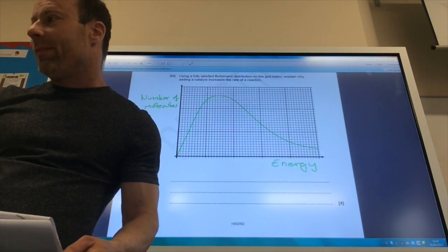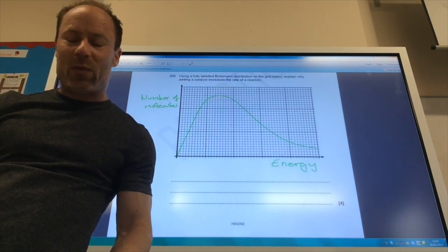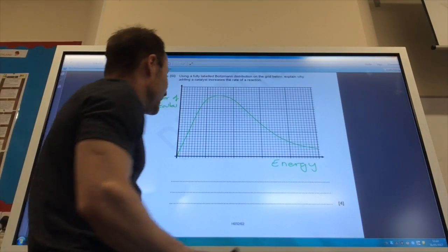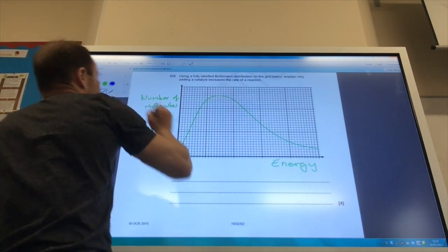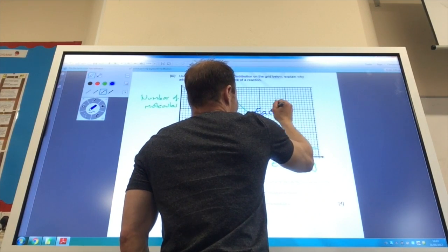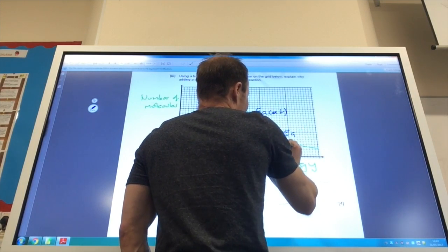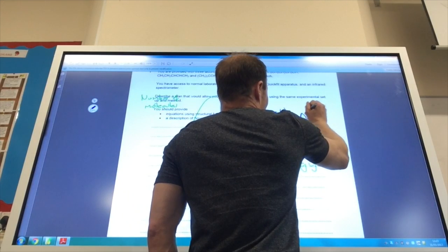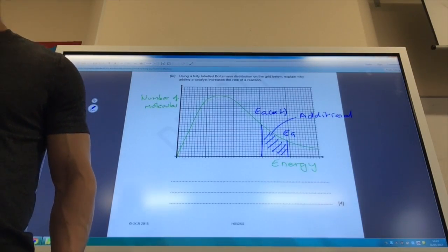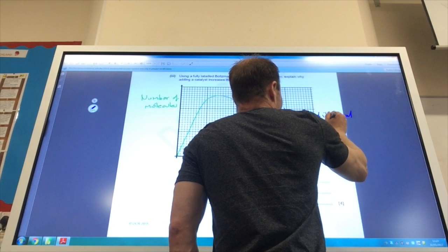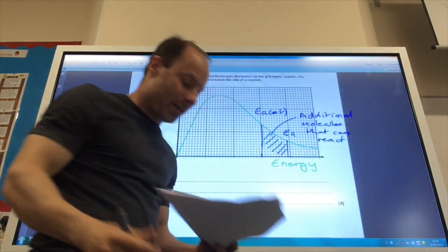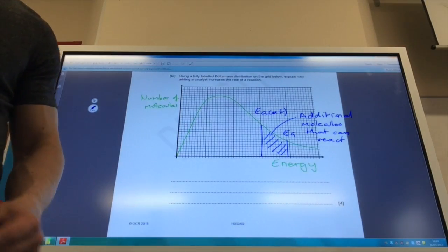Okay, so they want me to now draw a Boltzmann distribution, which I've done. Remember to label your axis. Explain why adding a catalyst increases the rate of reaction. Well, a catalyst provides an alternative route with a lower activation energy, so if you like, you can label this on the diagram. So if that's Ea, this is Ea with a catalyst, like so. So this is the additional number of molecules that can react. Let's just sort my additional molecules that can react. Because the activation energy has been lowered. Okay, so I think that's it.